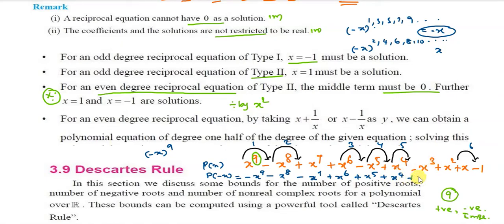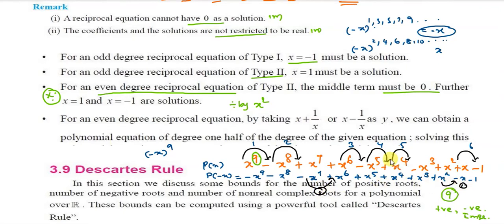In p(minus x), the resulting sign sequence gives sign changes. Counting the changes: there is a change, another change, and more changes — totaling 2 sign changes for p(minus x). This means there are at most 2 negative roots. With 6 positive and 2 negative roots, that accounts for 8 roots out of 9, so 1 must be imaginary.